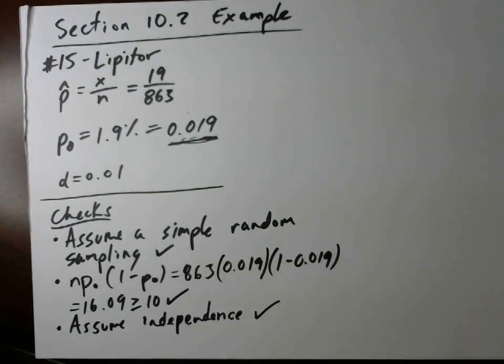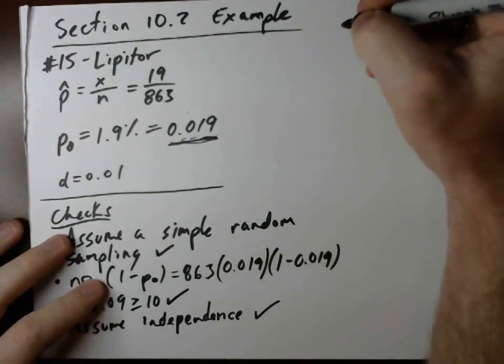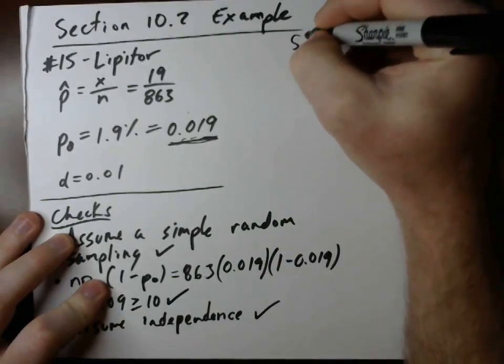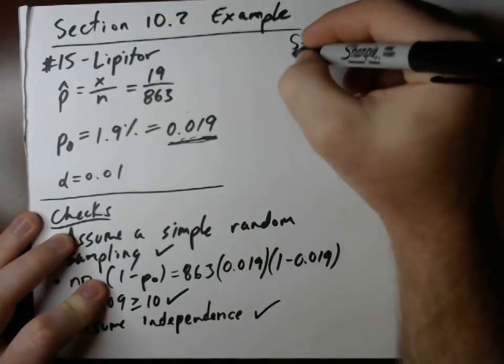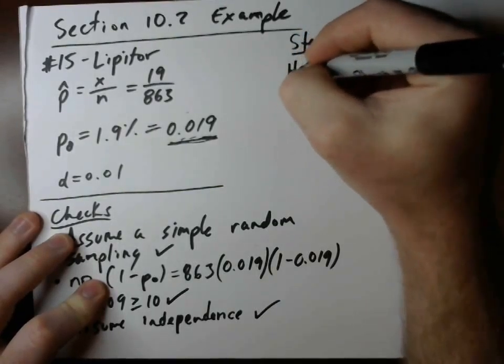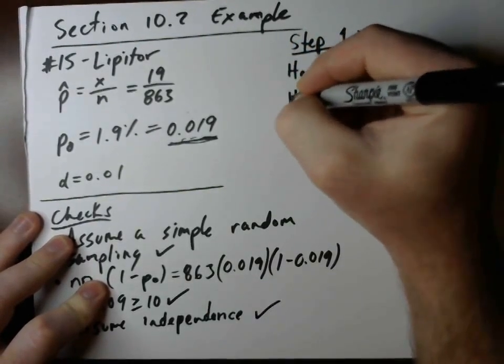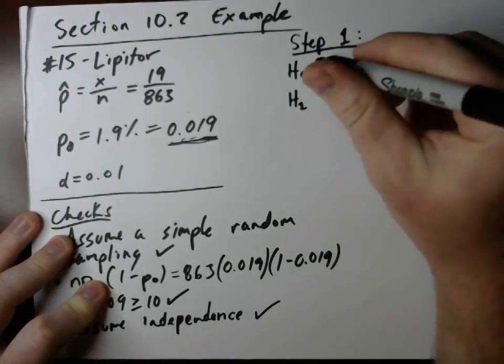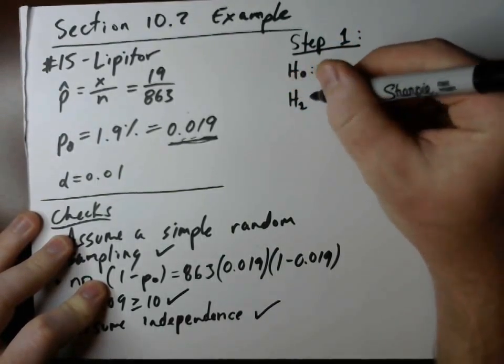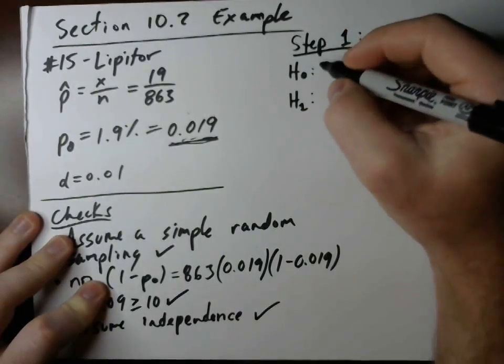Step one is where we go into the null and alternative hypothesis. So reading the problem, let's figure out what part of the problem, number 15, that tells us what type of. Well, let's start on this. Step one is dealing with our null and alternative. So we always have the same sort of information at first.